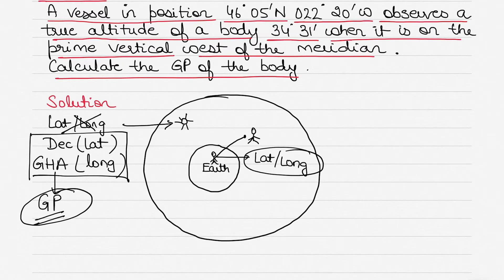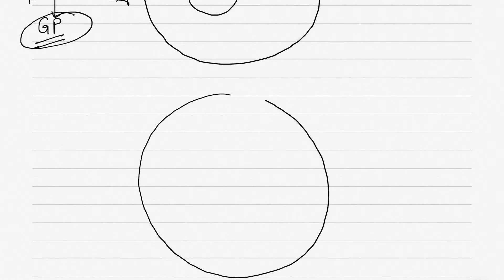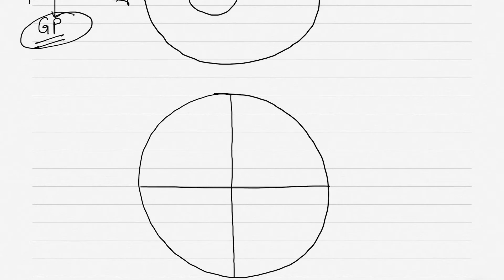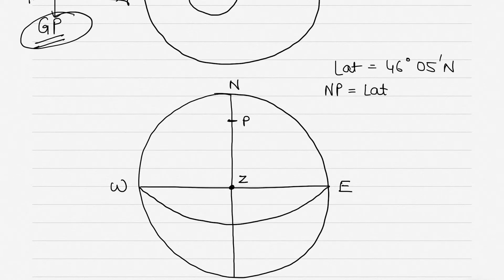In this question we'll learn how to calculate the geographical position given the vessel's position. To do that I'll draw the rational horizon diagram. The circle represents the celestial sphere with north, south, east, and west. Because our latitude is 46°05'N, I'll draw the north pole NP such that NP equals the latitude. Then I draw the equinoctial south of the observer — the observer is always at the center Z — and WQE, where Q is the celestial equator.